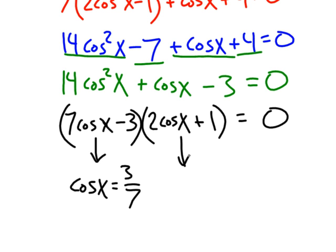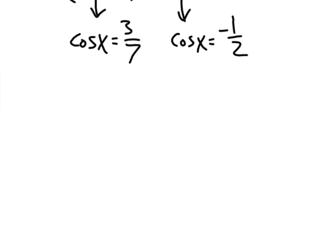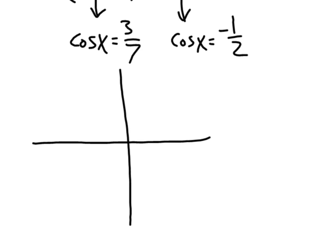This factor gives cosine of x equals 3 sevenths. This other factor gives cosine of x equals negative one half. I'm going to do this all on one unit circle picture. Let's do the easier one first — the one with our special ratios. Cosine equals negative one half: that would be at two pi over three and four pi over three.